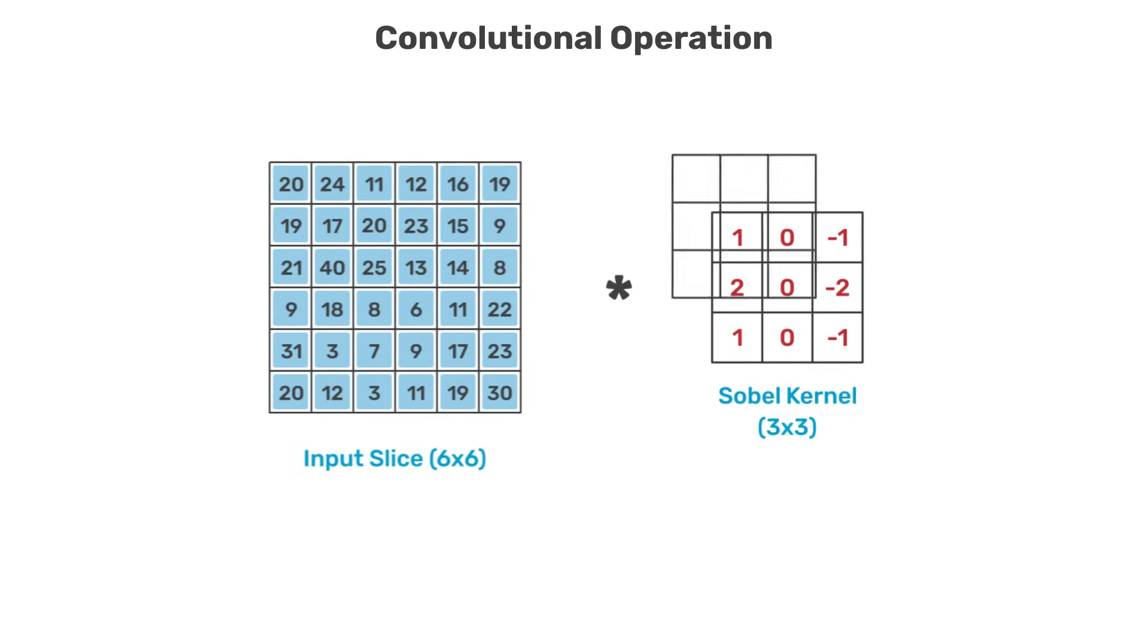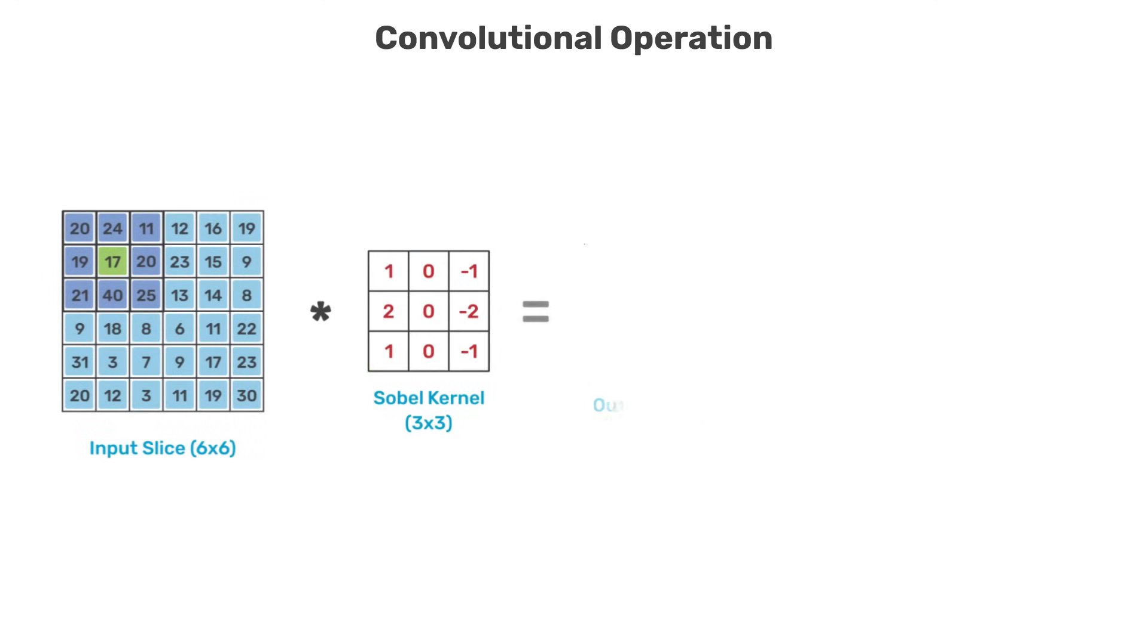The convolution operation consists of placing the filter over a portion of the input and multiplying the elements of the filter with the corresponding elements of the input. The resulting value is a single number representing the output of the convolution operation for a given filter location.